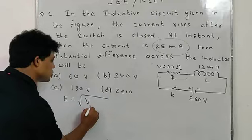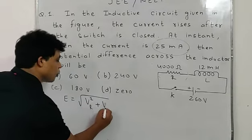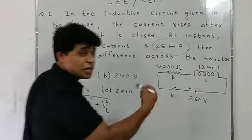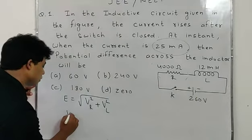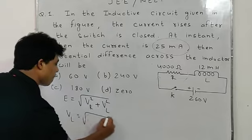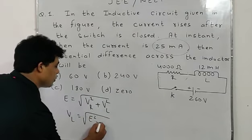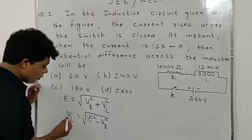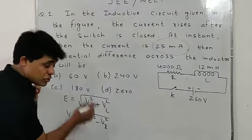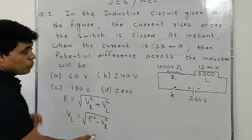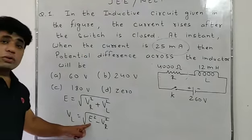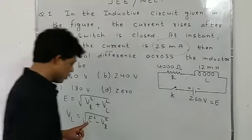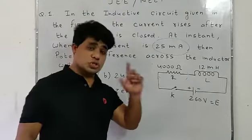When R and L are connected, the total EMF equals potential due to resistor plus potential due to inductor. We have to find VL. The formula is: VL = √(E² − VR²). The total EMF E is given as 260 volt.